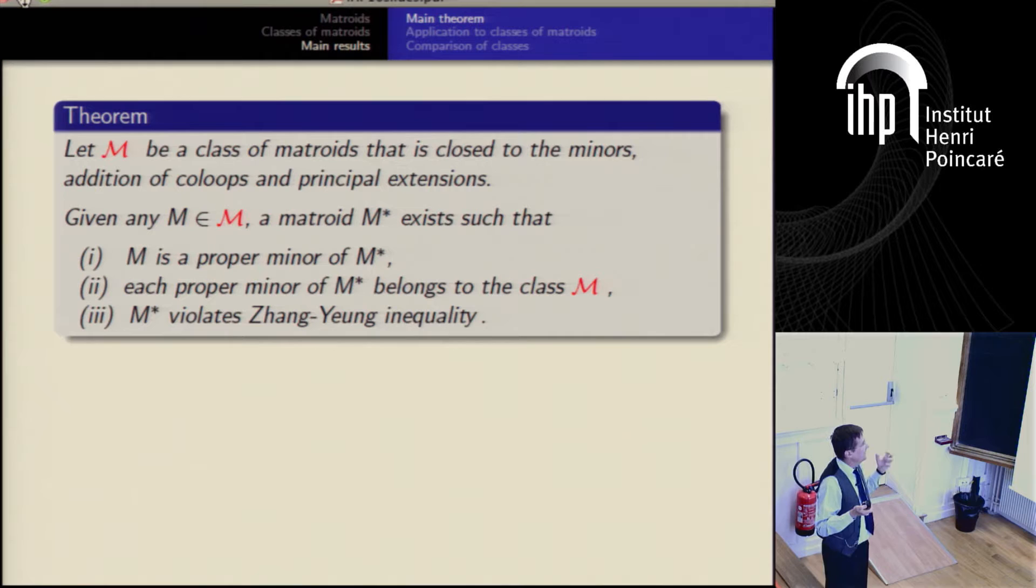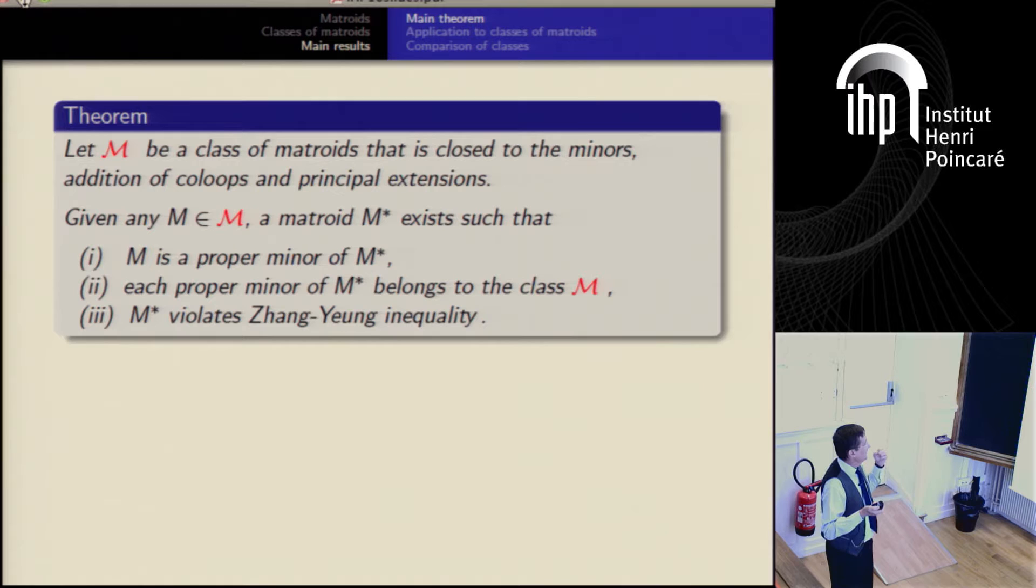And this, how do you say, bigger matroid contains the original one as a subconfiguration. But violates, Zhang-Yang is not OK, it's violated. And it's smaller subconfiguration of this M-star is OK, it's in the class, which means for every almost-entropic matroid, it's possible to find another matroid which is about four times bigger, which is not almost-entropic because Zhang-Yang inequality is violated. And each subconfiguration is almost-entropic because it's in the class, which means there are infinitely many forbidden minors for the class of almost-entropic matroid. This is a consequence.